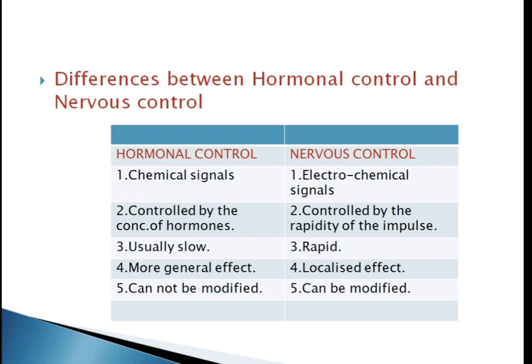The second property is the size of signal. Under hormonal control, it is controlled by the concentration of hormones. Whereas under nervous control, it is controlled by the rapidity of the impulse, determined by the frequency of nerve impulses sent along a nerve fiber, and a large number of nerve fibers get stimulated.